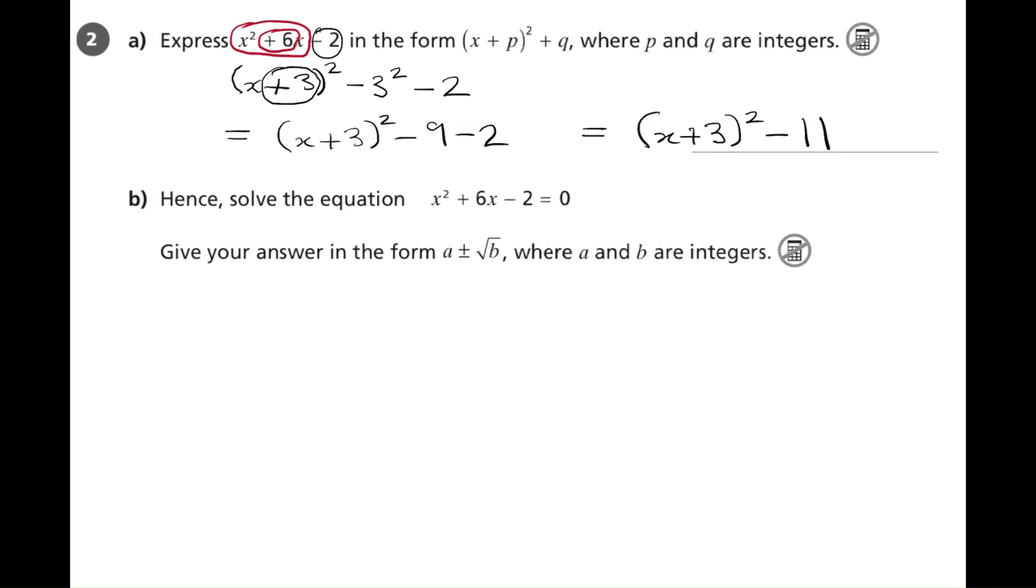Moving on to part B, we're going to solve the equation. No calculator allowed. So the assumption is that we're going to use the answer we've just got. So we write the equation as x plus 3 all squared minus 11 equals 0.